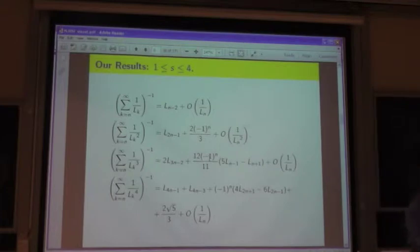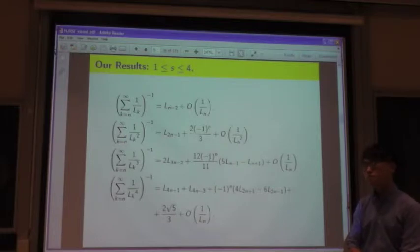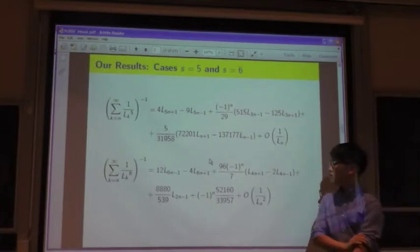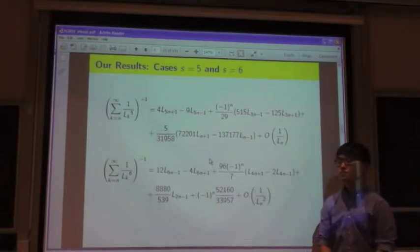Well, how far did you go with that, with the powers? I went up to case seven. Seven? What are five and six and seven? O of big O of what? There you go. This would be the expression here. Oh, it's still no cube. Still no O of one over LN cube, right?